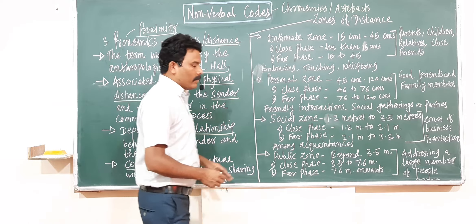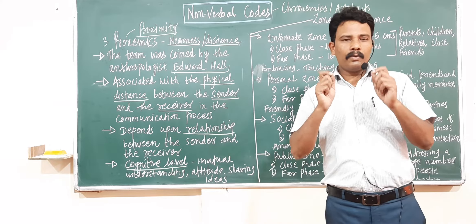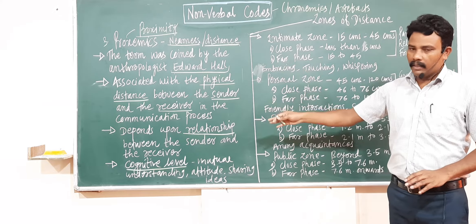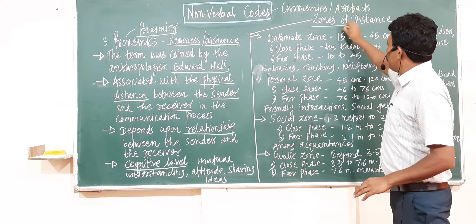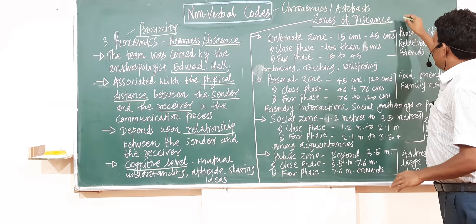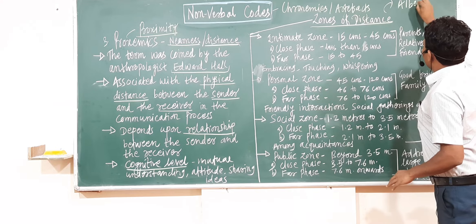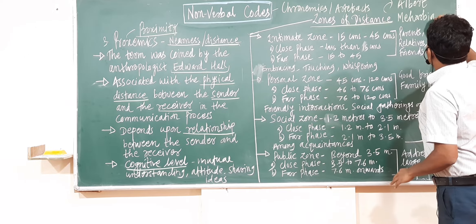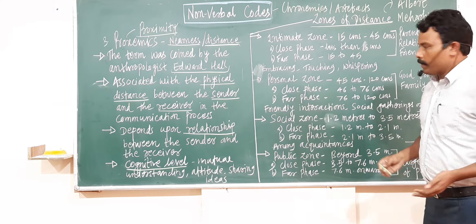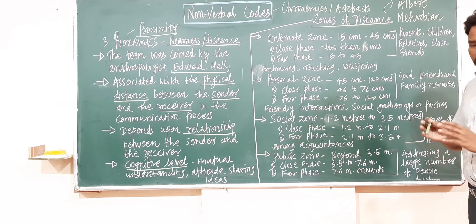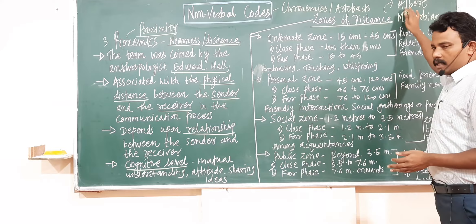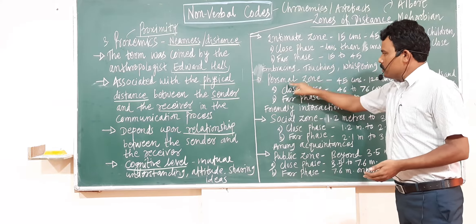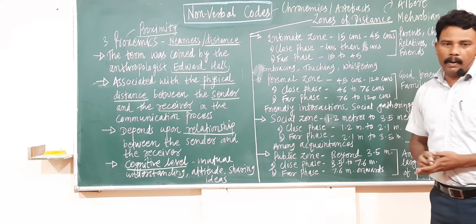Now let us move to the zones of distance, which is a very important part. Everyone should understand this. On the basis of the concept of Proxemics, Albert Mehrabian identified four zones of distance: intimate zone, personal zone, social zone, and public zone.